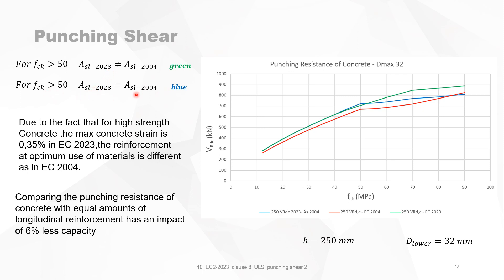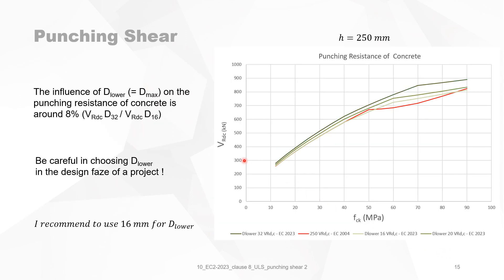For a slab of 250 mm depth with D_lower = 32 mm, the punching resistance of the concrete is compared for different concrete qualities. The red line is the reference from 2004, and different lines show the calculated shear capacity for various concrete qualities and aggregate sizes.